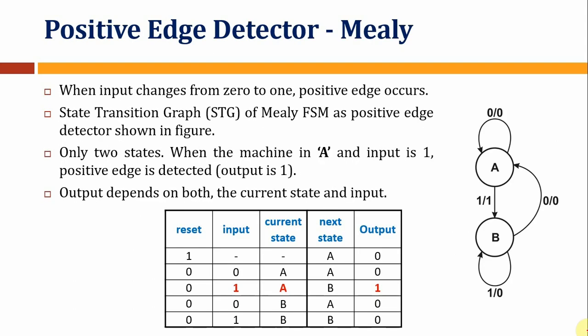The first example is a positive edge detector, in which we have a binary input. When the input goes from 0 to 1, the output of the machine provides an indication of a positive edge. We have two states: state A and state B, which we discussed in the last lecture. We created a state transition graph for this problem.